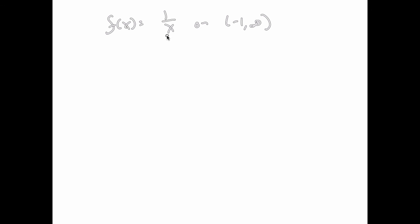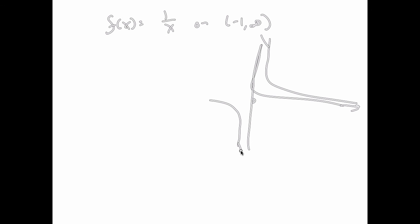Moving on to continuity. Consider 1/x — is this continuous on the domain including 0? No. As x goes to 0, this thing goes to infinity. Going from positive to negative x, there's a discontinuity at 0 — you're going abruptly from positive infinity to negative infinity. However, on the domain from 1 to infinity, it is continuous because from 1 onward there are no jumps. So it's a continuous function on that domain, but not on a domain that includes 0. That gives you some examples for how to do this stuff — see you in problem session for lecture 3.